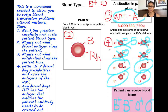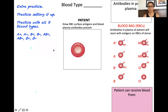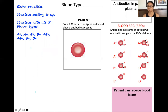So you have the slide where I demonstrated B positive blood. In the next slide we have a blank slide set up, and in this slide you're able to do extra practice. There are only eight blood types, so you're able to practice all eight, and when you see them again you should be able to solve them.